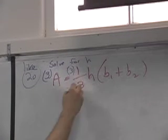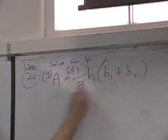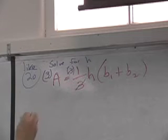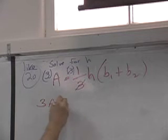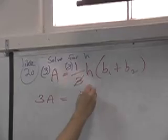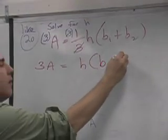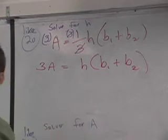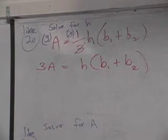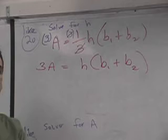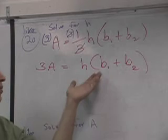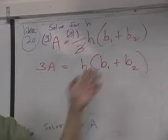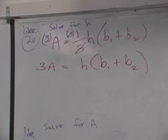And now somebody tell me what we should write on the next line. Kia, what should we write on the next line? 3A. Yep. 3A equals H. Yep. Inferences B1 plus B2. Right. And this 1 and 2 are only there to tell you this is B1 and that's B2. That's all it is. They're not exponents or anything like that. They're called subscripts. They could be like C and D. But instead we call them B1 and B2.